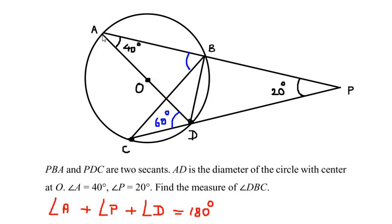Consider points A and C on the circle. These two points divide the circle into a major segment and a minor segment. We can see that these two points make an angle at point B in the major segment, and the same two points make an angle at point D. Using the angles in the same segment theorem, since angle D is 60 degrees, angle B is also 60 degrees.